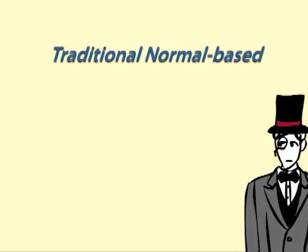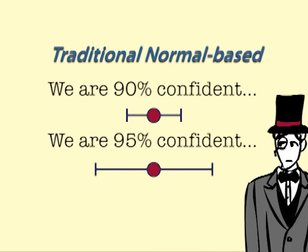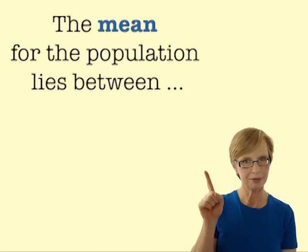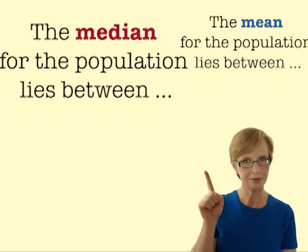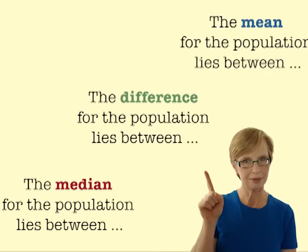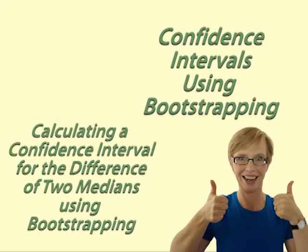When we use traditional confidence interval formulas, the stated level of confidence also affects the width of the confidence interval. All estimates of population parameters — such as means, medians, differences of means, and differences of medians — should be expressed as confidence intervals. You can learn more about how to calculate confidence intervals in our other videos.